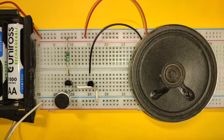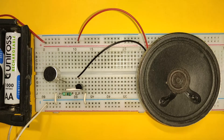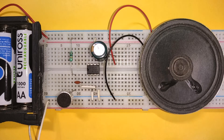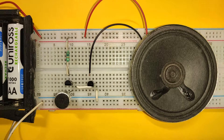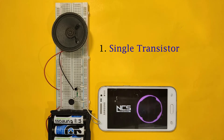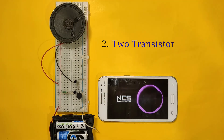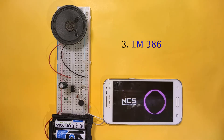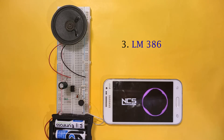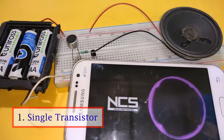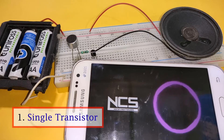Hi everyone! In this video, I am going to show you three ways to make a loudspeaker circuit. First, by using a single transistor. Then, using two transistors. And last, by using LM386 IC. So, let's start with the circuit using a single transistor.